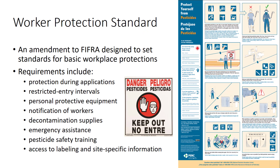Many state and federal regulations are in place to protect employees working in urban landscapes, farms, forests, nurseries, and greenhouses from occupational exposure to pesticides. The federal regulation that governs all aspects of agricultural pesticide use is the Federal Insecticide, Fungicide, and Rodenticide Act. The Worker Protection Standard is an amendment to FIFRA designed to set standards for basic workplace protection. The WPS is intended to reduce the risk of illness and injury from occupational exposures for agricultural workers and pesticide handlers. Its requirements include protection during applications, restricted entry intervals, personal protective equipment, notification of workers, decontamination supplies, emergency assistance, pest site safety training, and access to labeling and site-specific information.